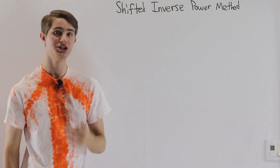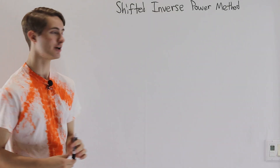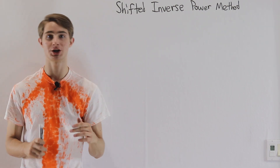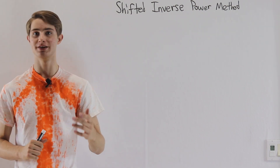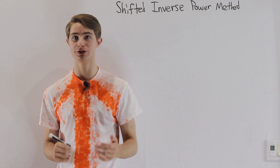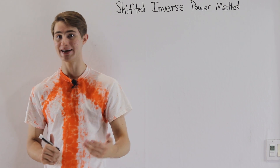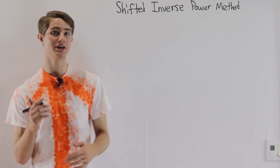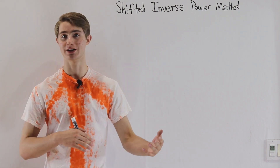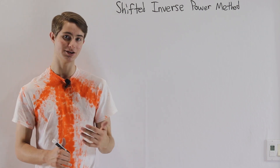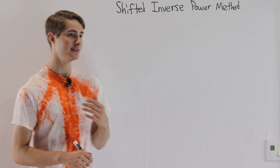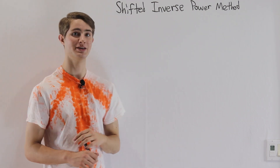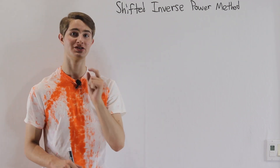We are going to talk about the shifted inverse power method. In the last video we talked about the power method and how you can use that to find the eigenvalue with the biggest magnitude. But sometimes we want to find a particular eigenvalue or something that's not the biggest one. In that case the shifted inverse power method is going to help us out a lot.